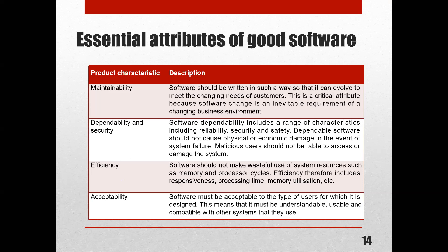The third attribute is efficiency. The software should not make wasteful use of system resources such as memory and processor cycles. If you buy software that takes too much memory space or causes slow processing speed, you would never buy it because it does not qualify as good software. Efficiency includes responsiveness, processing time, and memory utilization. Memory utilization should be very low.